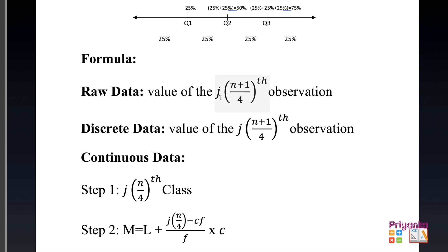For raw data and discrete data, the quartile formulas are the same. The formula changes when the data is continuous. Even in continuous data, j is included depending on what quartile is asked. The step 2 formula for quartile is very similar to median — totally the same structure — only j and the divisor 4 change.